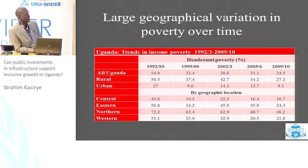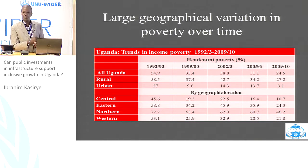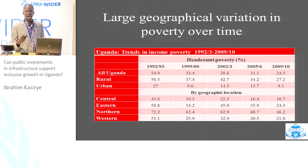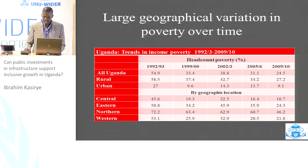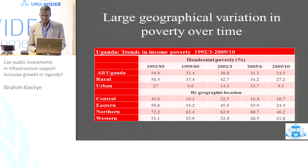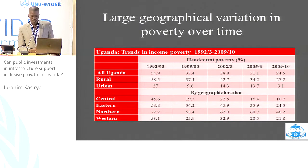This table demonstrates the large variation in income poverty across space in Uganda, using geographical regions as the point of reference. It shows the trends in income poverty from the period 1992 to 2009-10. For the whole of Uganda, poverty decreased from 55% to close to 24% over this period, and the trend is consistent for both urban and rural areas. When it comes to geographical location, most of the progress has been recorded by central Uganda. Nonetheless, by 2009-10, there were very wide geographical differences in poverty rates.